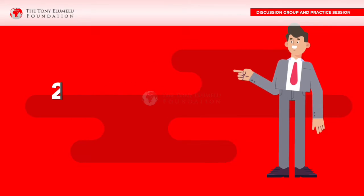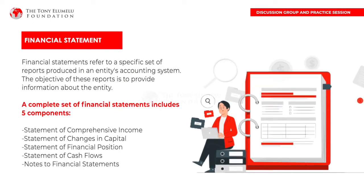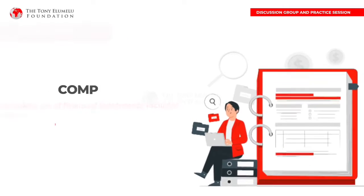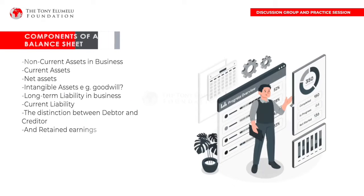Financial statements refer to a specific set of reports produced in an entity's accounting system. The objective of these reports is to provide information about the entity. A complete set of financial statements includes five components: statement of comprehensive income, statement of changes in capital, statement of financial position, statement of cash flows, and notes to financial statements. Components of a balance sheet include: non-current assets, current assets, net assets, intangible assets such as goodwill, long-term liability, and current liability.